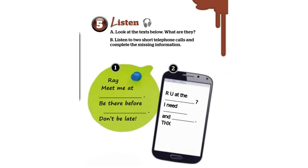Listen to two short telephone calls and complete the missing information. Call one — Hello Ray, where are you? I'm at home. Did you see my note? No, sorry. Oh well, I'm at the theater. Want to come? Yeah, okay. Well, get here quickly, the show starts at seven o'clock. Okay, I'm leaving now.